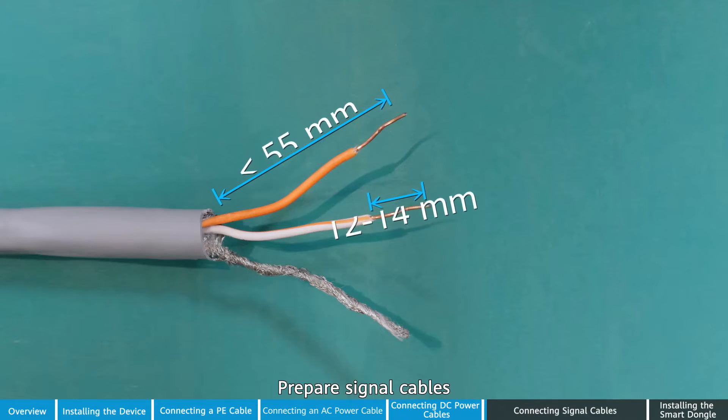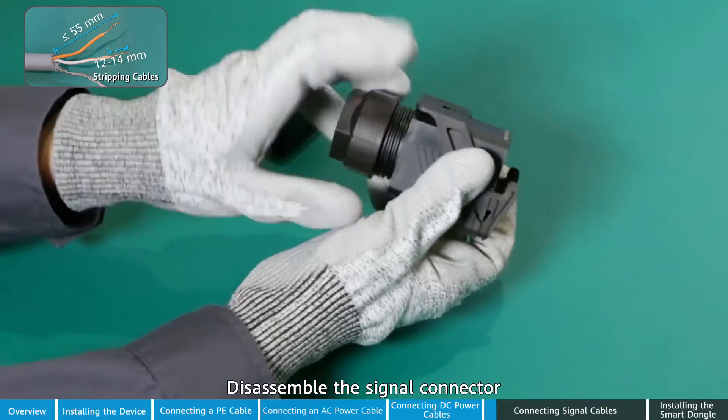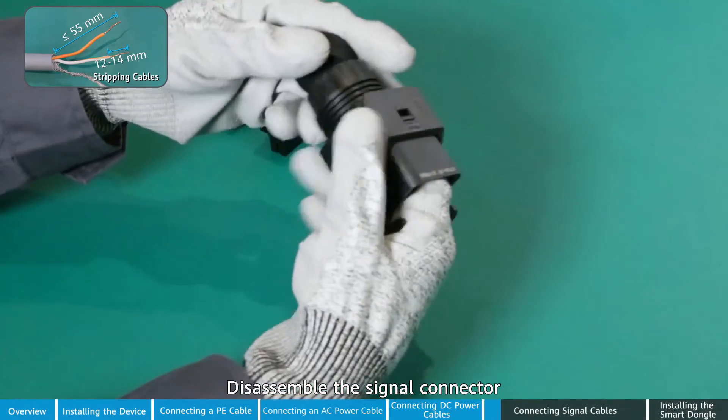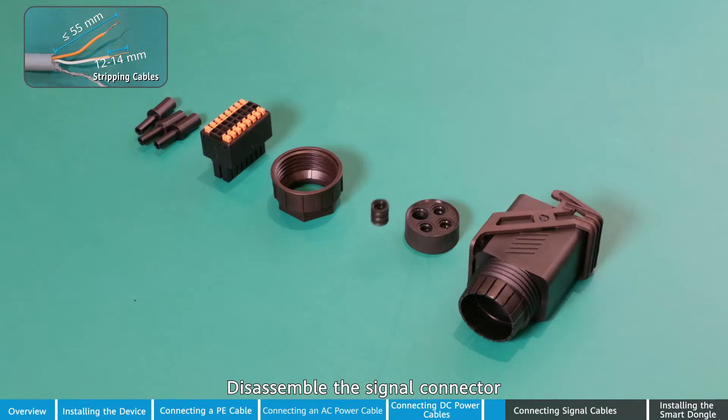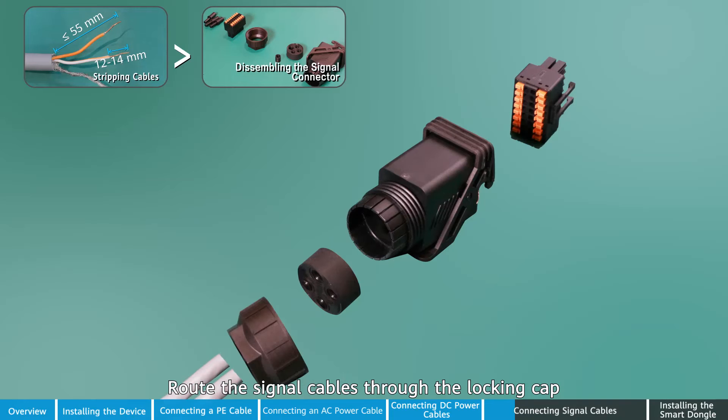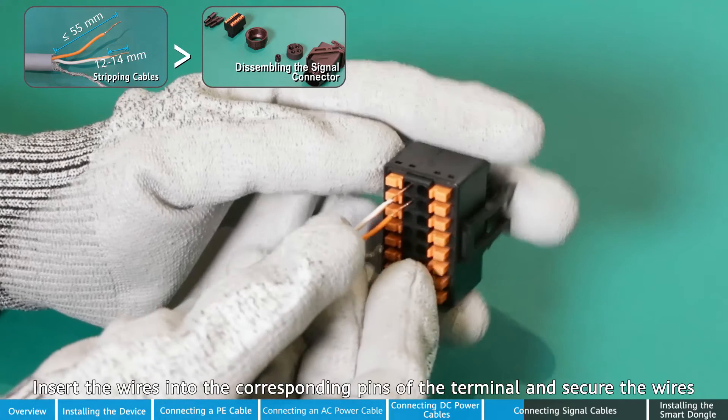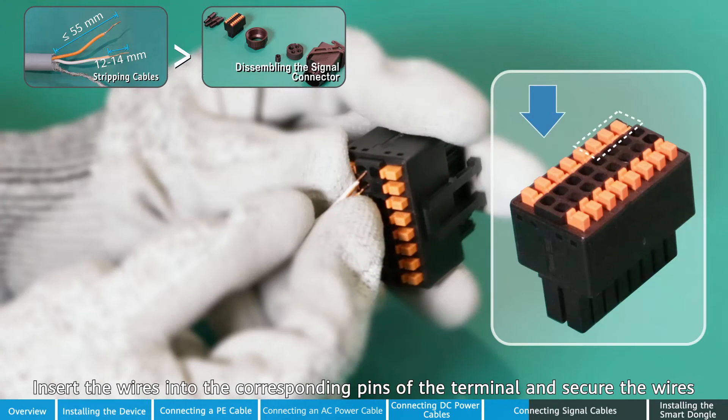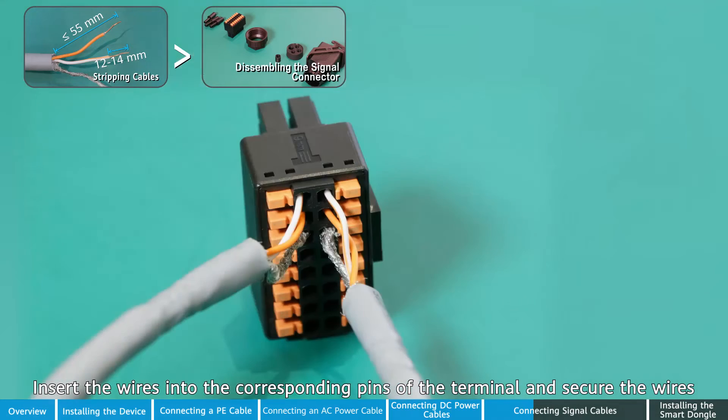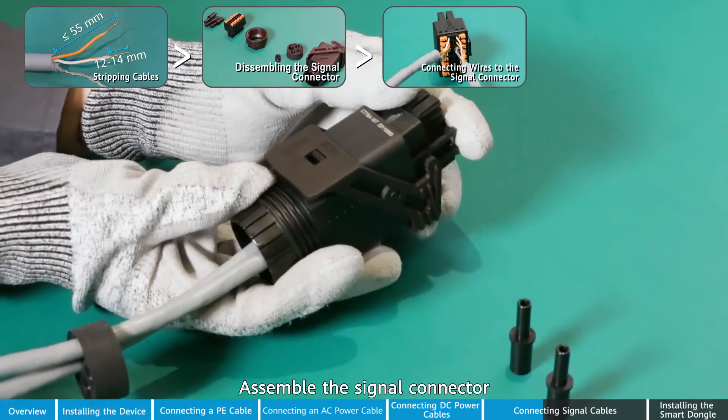Prepare signal cables. Disassemble the signal connector. Route the signal cables through the locking cap and the waterproof rubber plug in sequence. Insert the wires into the corresponding pins of the terminal and secure the wires. Assemble the signal connector.